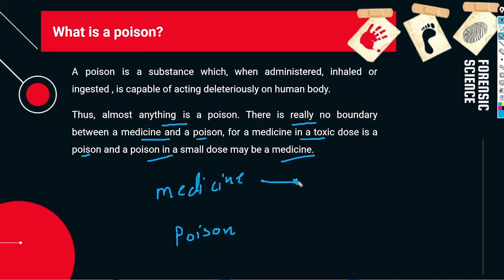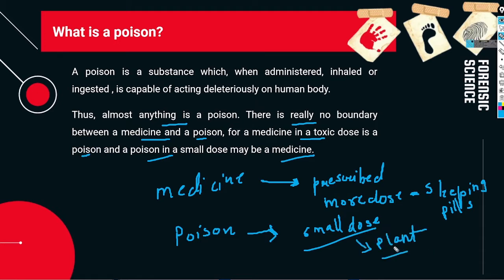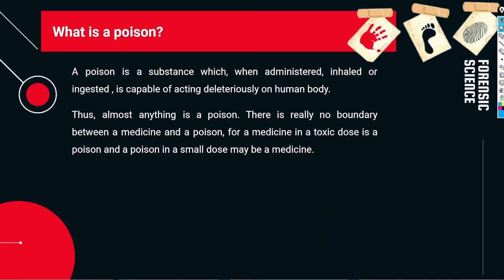If you take medicine in the required amount prescribed by the doctor, it acts as a medicine. But if you take more doses, it acts as a poison. For example, sleeping pills taken beyond the prescribed dose act as a poison. Similarly, poison taken in a small dose can act as a medicine. Plants are a common example — small amounts act as medicine, larger amounts act as poison. We will discuss plant poisons in further lectures.